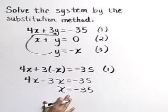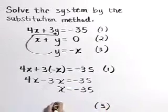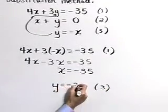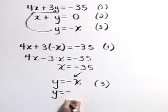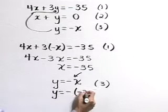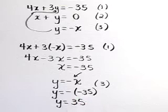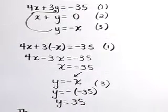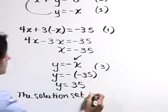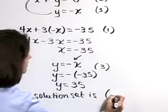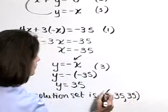We're almost there. Now we need to solve for y. In equation three, we have that y is equal to negative x. And so we can quickly determine that y is equal to the negative of negative 35, or y is equal to positive 35. So the solution set is the point where x is equal to negative 35, y is equal to positive 35.